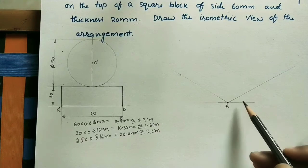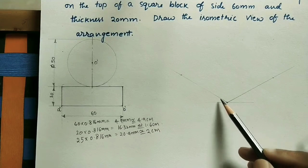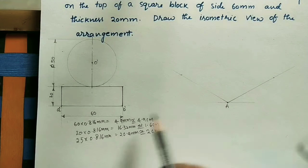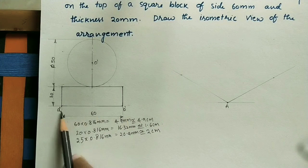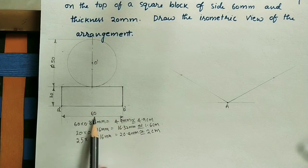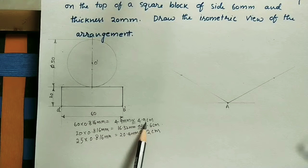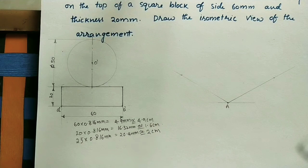Now this is 30 degrees and this is 30 degrees. Take the AB length — how much is it? 60 mm, but in isometric view we have calculated this value as 4.9 centimeters.